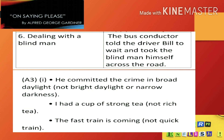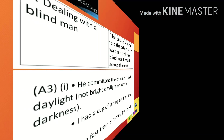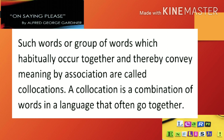Our next question is A3. He committed the crime in broad daylight — the meaning in bracket is not bright daylight or narrow darkness. I had a cup of strong tea — not rich tea. The fast train is coming — not quick train. Here some opposite meaning words are given. Such words are called collocations. Words or group of words which habitually occur together and thereby convey meaning by association are called collocations. A collocation is a combination of words in a language that often go together.